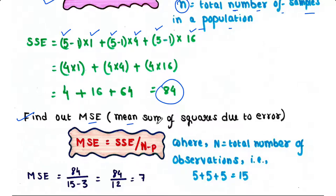Next step is to find out MSE or mean sum of squares due to error. The formula to find out MSE is SSE divided by N minus P, where this capital N is equal to total number of observations, that is in our case 5 plus 5 plus 5 is equal to 15. And SSE is already calculated, that is 84 divided by N is 15 and P is 3. So 84 by 12, that is 7.